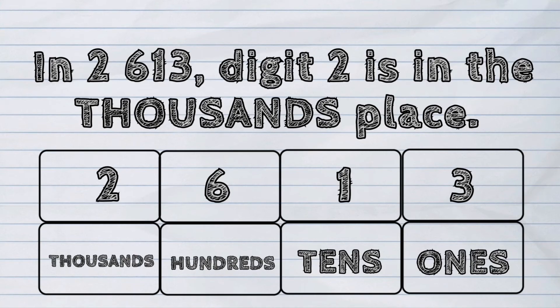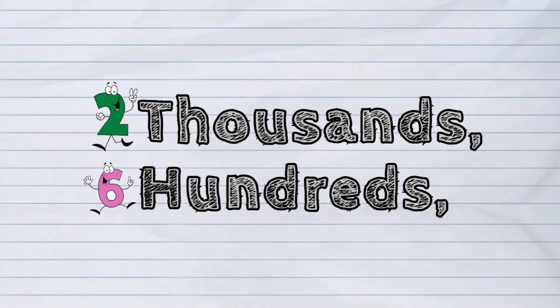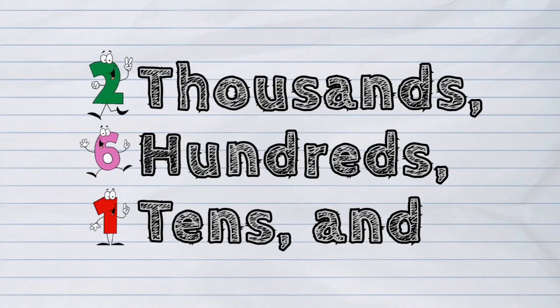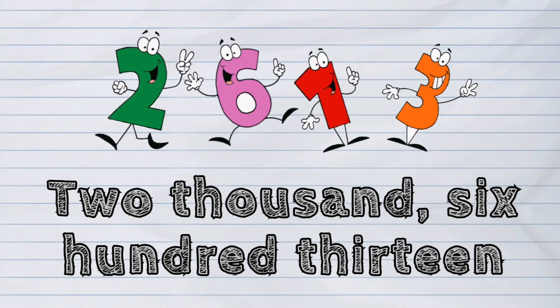So, it's two thousands, six hundreds, one tens, and three ones. We read it as 2613.